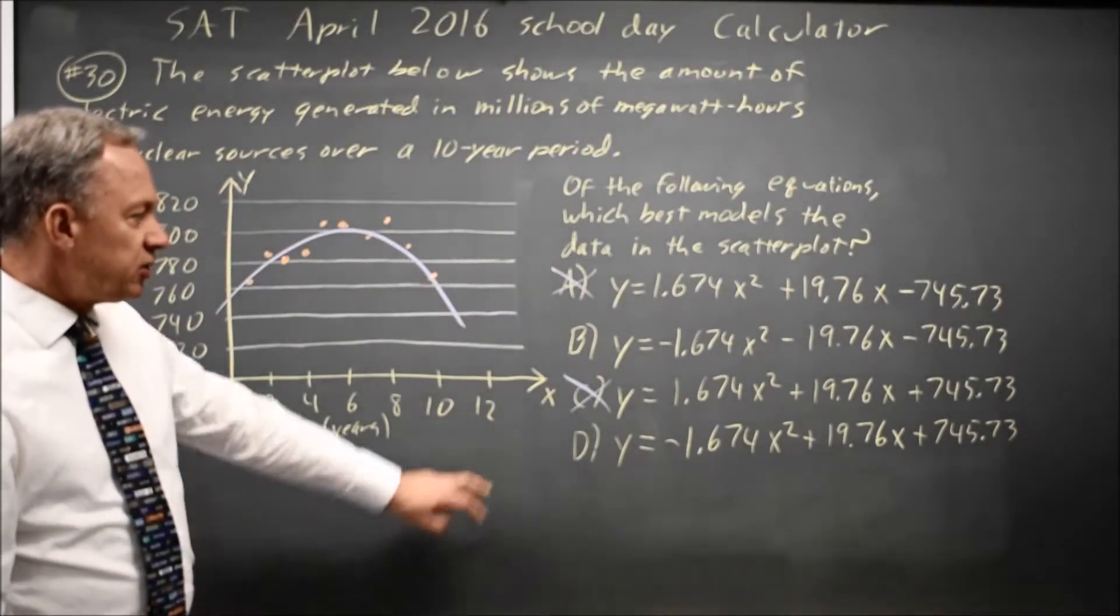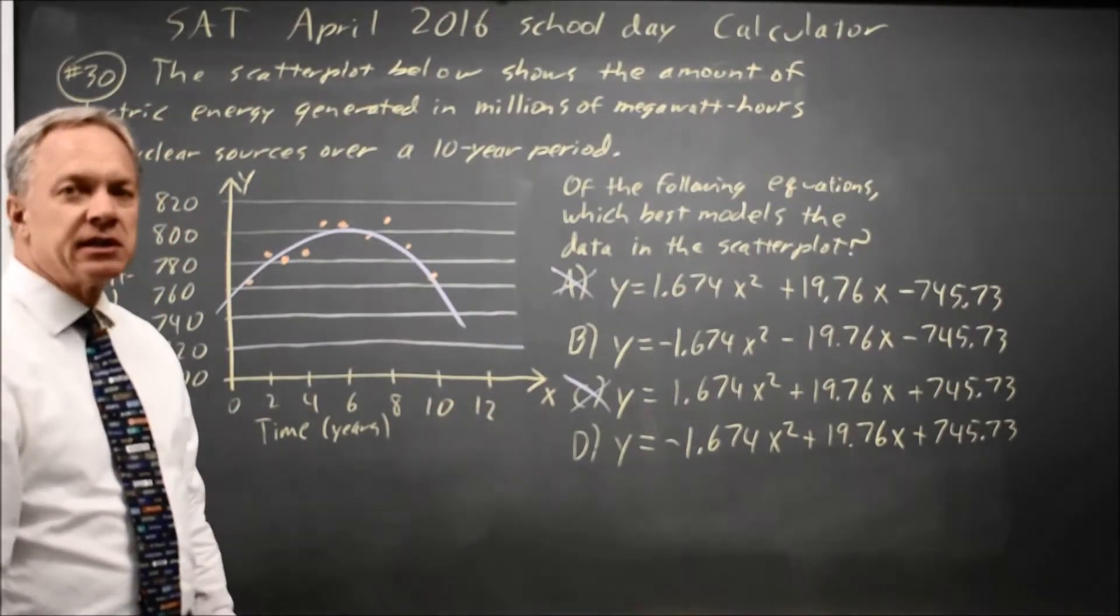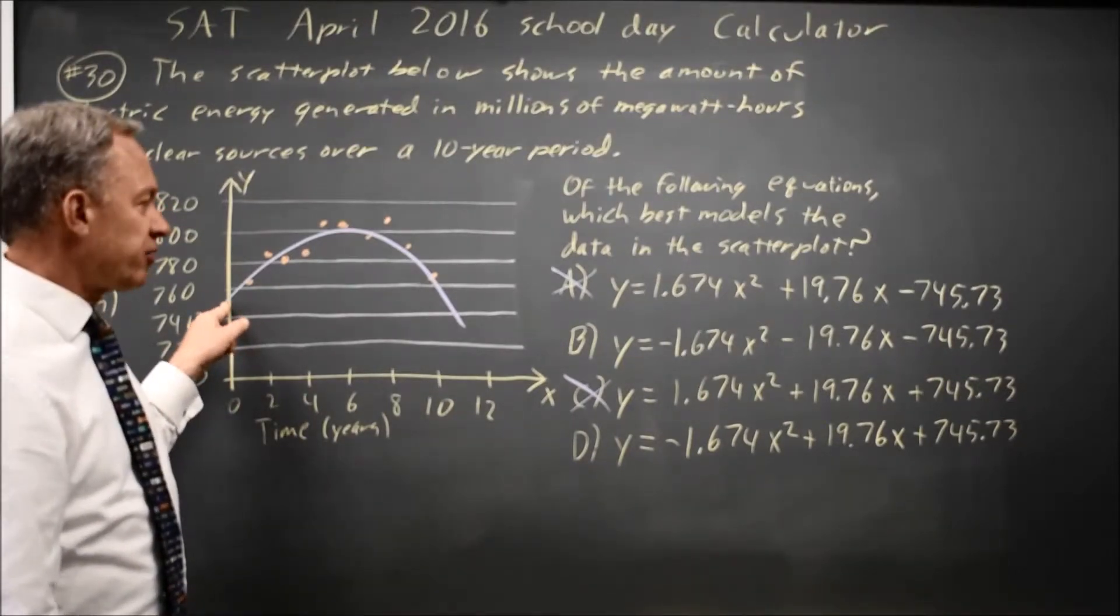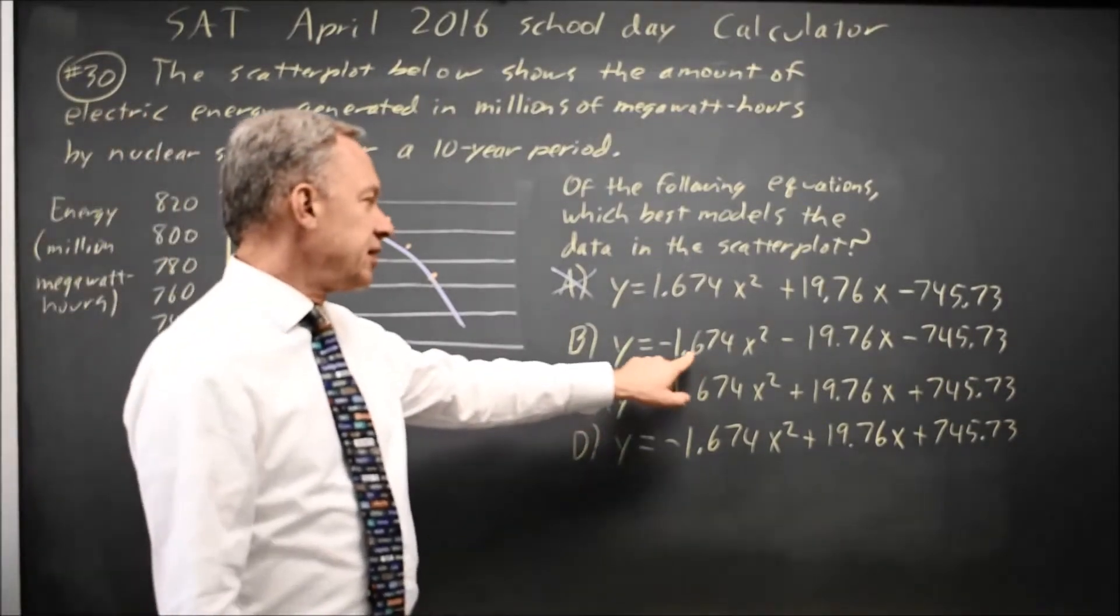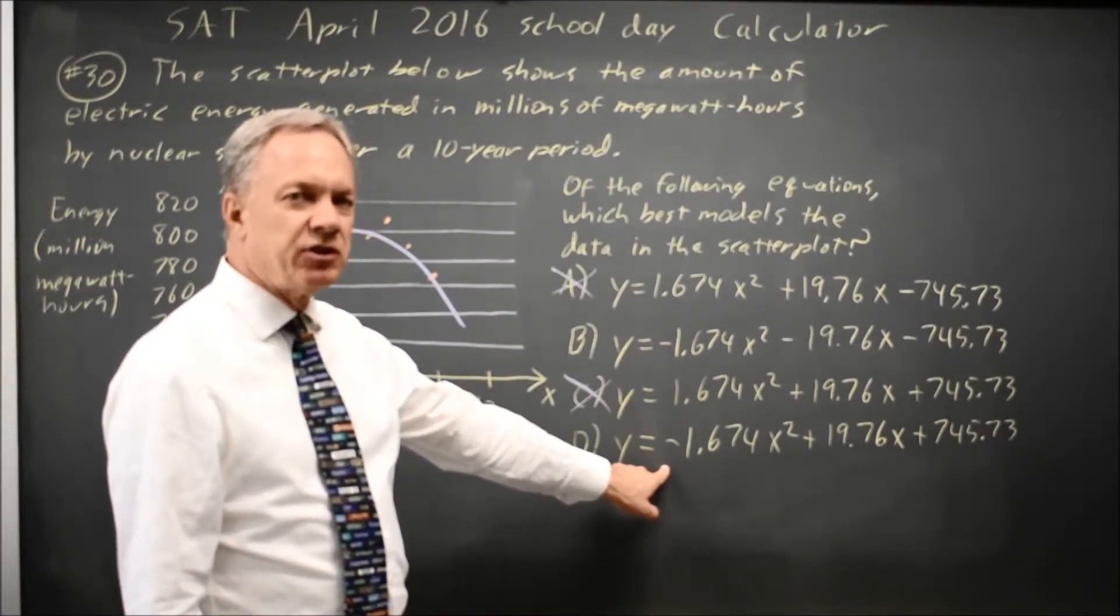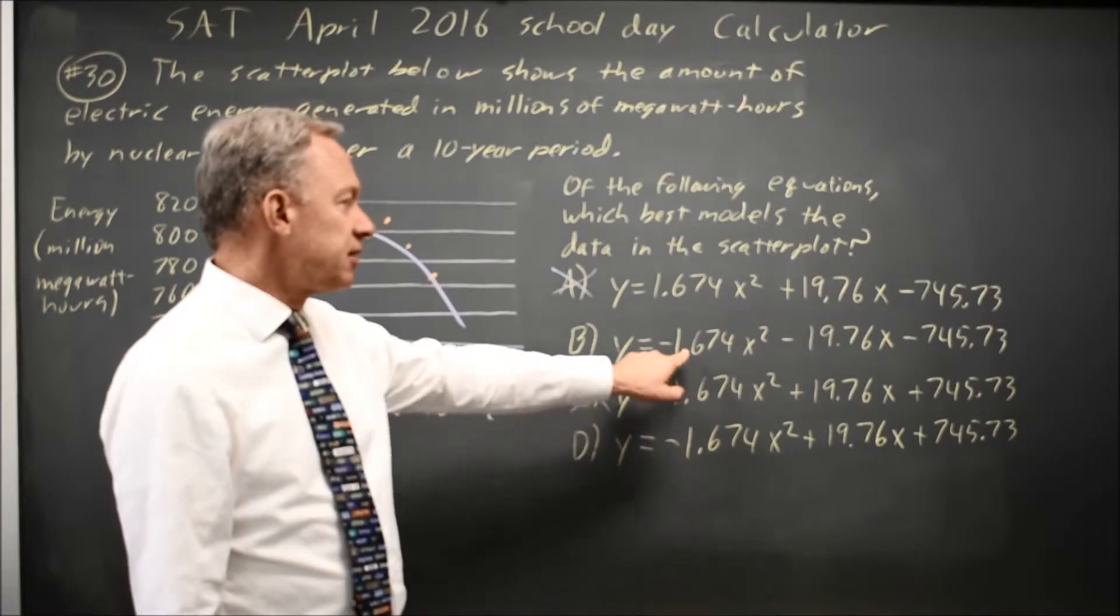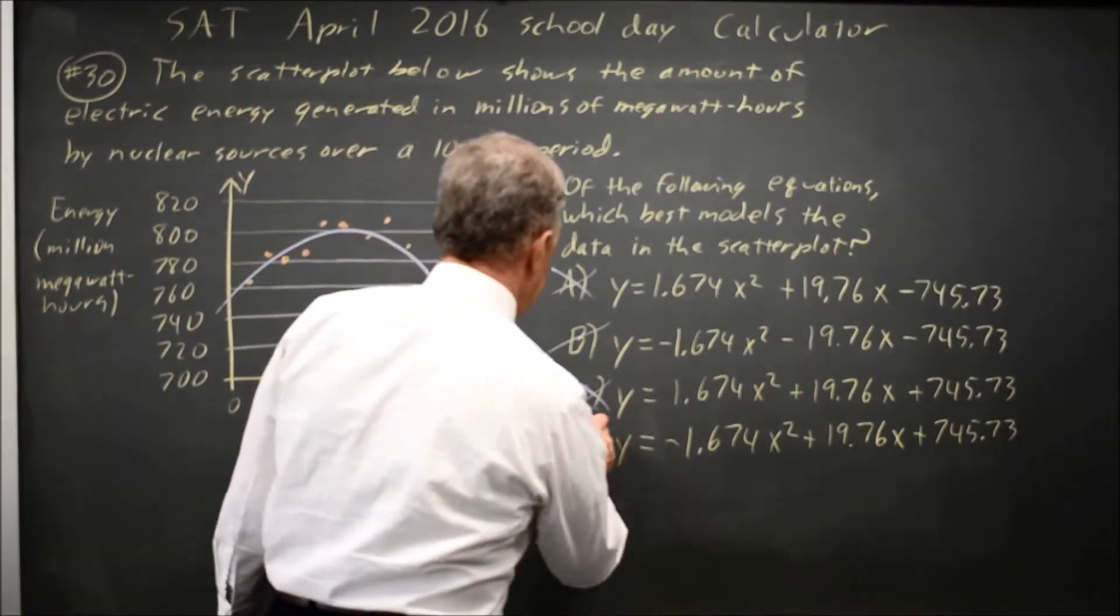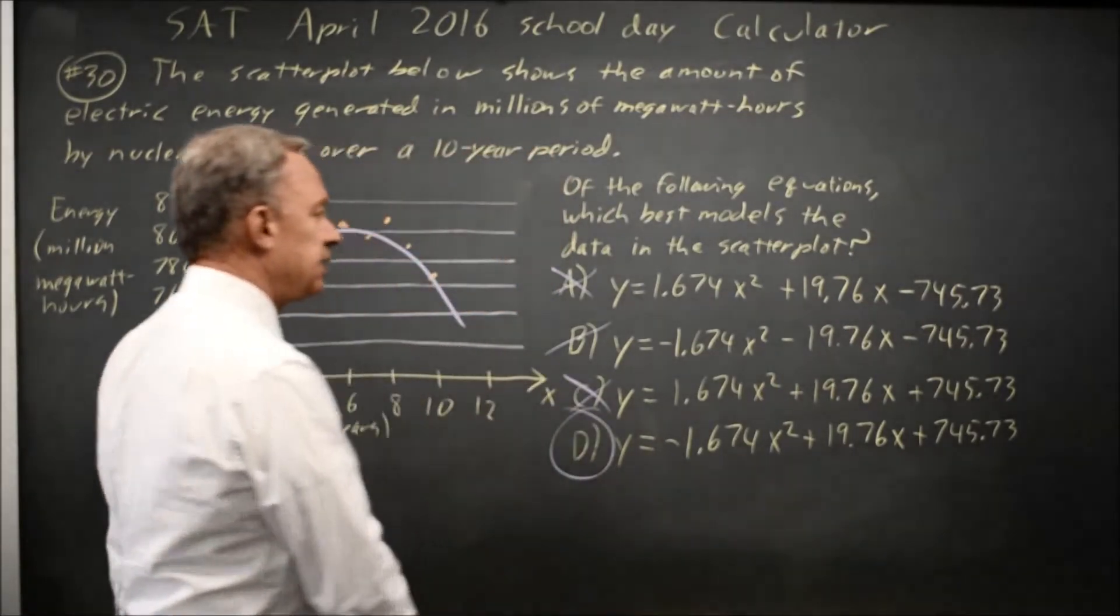Of the two choices, the easiest thing to identify is the y-intercept, which is positive. The y-intercept for B is negative, y-intercept for D is positive. The negative y-intercept clearly does not fit our data, so choice B is also wrong, leaving D as the model.